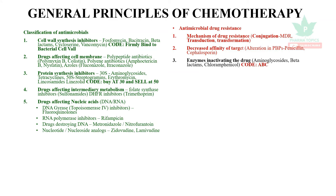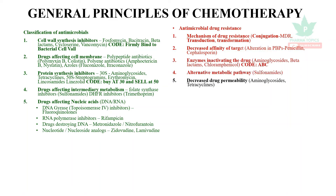Enzymes produced by bacteria that inactivate drugs — examples include aminoglycosides, beta-lactams, and chloramphenicol (remember with the code ABC). Alternative metabolic pathways can occur with sulfonamides. Decreased drug permeability leads to resistance of aminoglycosides and tetracyclines, and efflux pumps can generate resistance of tetracyclines, erythromycin, and fluoroquinolones.